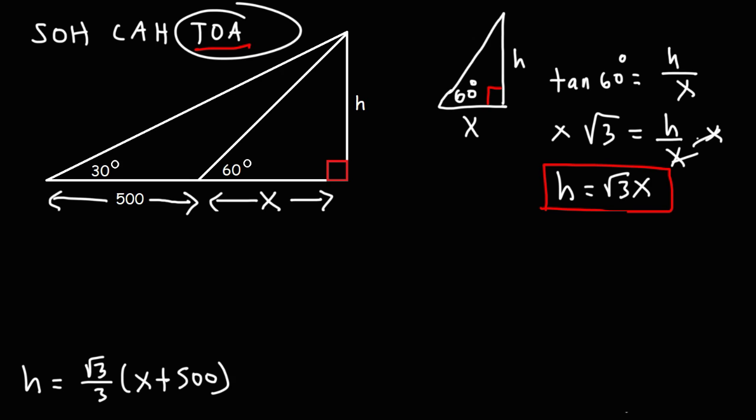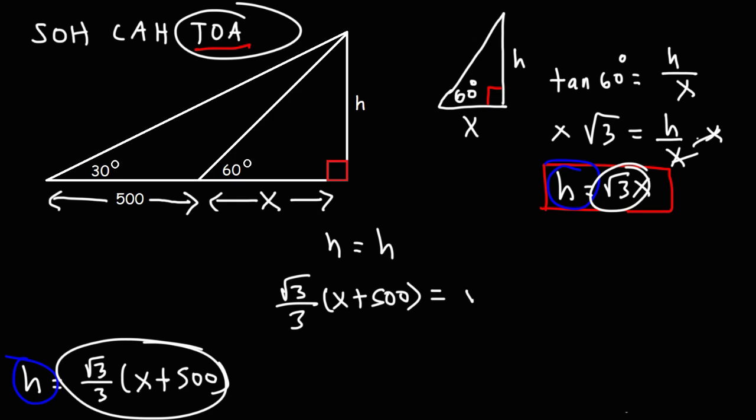So now, the next thing we need to do is set h equal to h. Which means that we can set these two equal to each other, since they're both equal to h. So we have the square root of 3 over 3 times x plus 500 equals the square root of 3 times x.